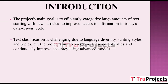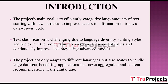Text classification is complicated due to language diversity, writing styles, and various topics. To tackle these challenges, the project utilizes advanced machine learning models and techniques to accurately categorize text. To maintain consistent accuracy in categorization, the project employs advanced models like PAL10 and the Voting Classifier, which elevate the accuracy of categorization even when dealing with diverse and evolving text data.